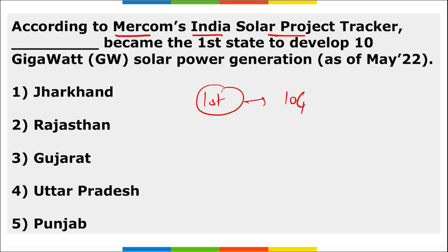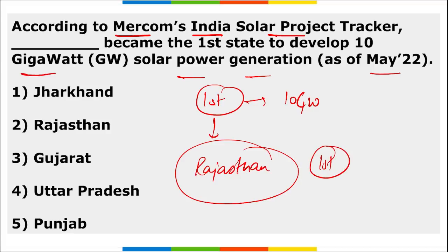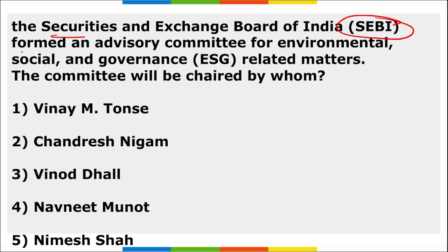According to MACCOM India Solar Project Tracker, Rajasthan became the first state to develop 10 gigawatts of solar power generation as of May 2022. Rajasthan secured the top position. Also, Gujarat is home to the first steel slag road, and the Global Centre for Traditional Medicines will also be set up in Gujarat.